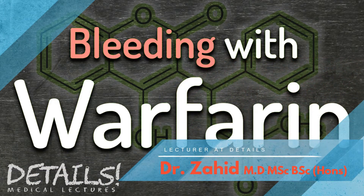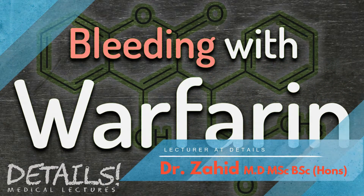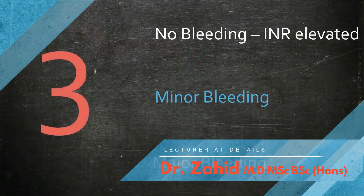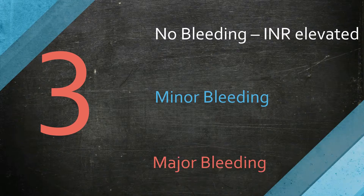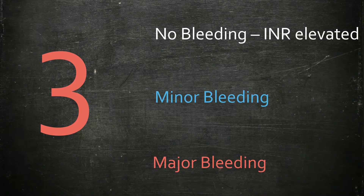An increased INR above 5 has several scenarios, the most favourable being no bleeding but a raised INR, followed by minor bleeding and then major bleeding.